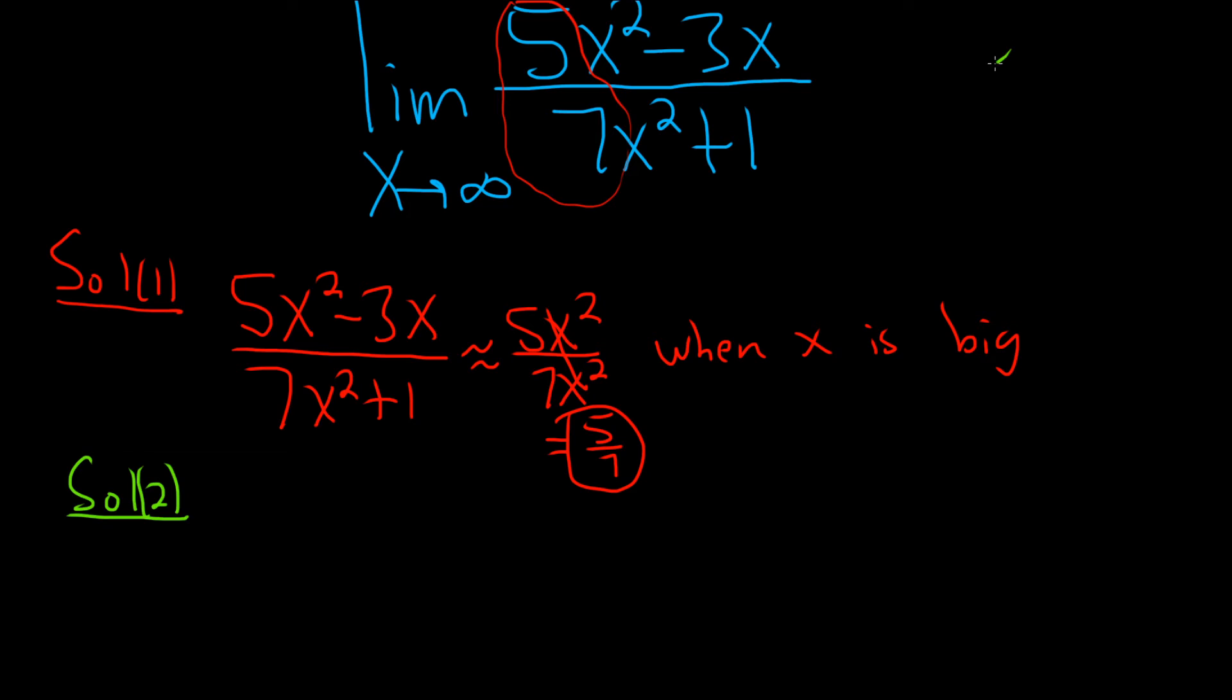So notice that the numerator is approaching infinity, and the denominator is also approaching infinity. So this limit has the form infinity over infinity. This is called an indeterminate form.